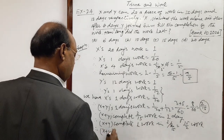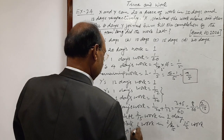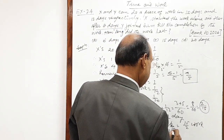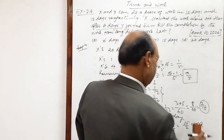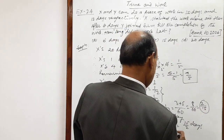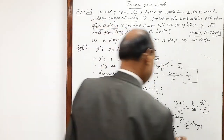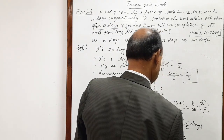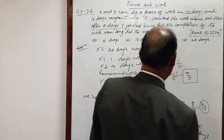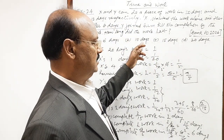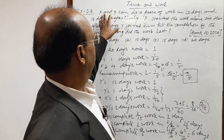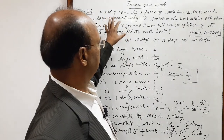Therefore, X and Y together complete 4/5 of the work in 15/2 × 4/5 days. Simplifying: 15 divided by 5 gives 3, and 4 divided by 2 gives 2, so 3 × 2 = 6 days. When Y joins X, they work together for 6 days.